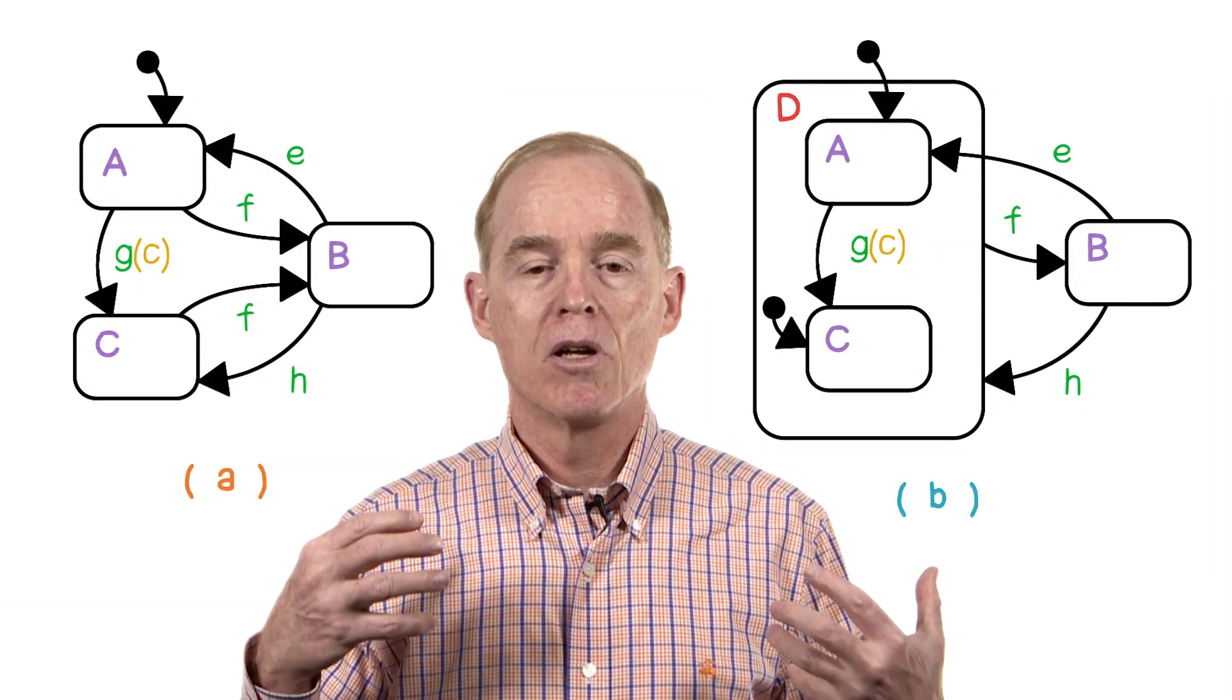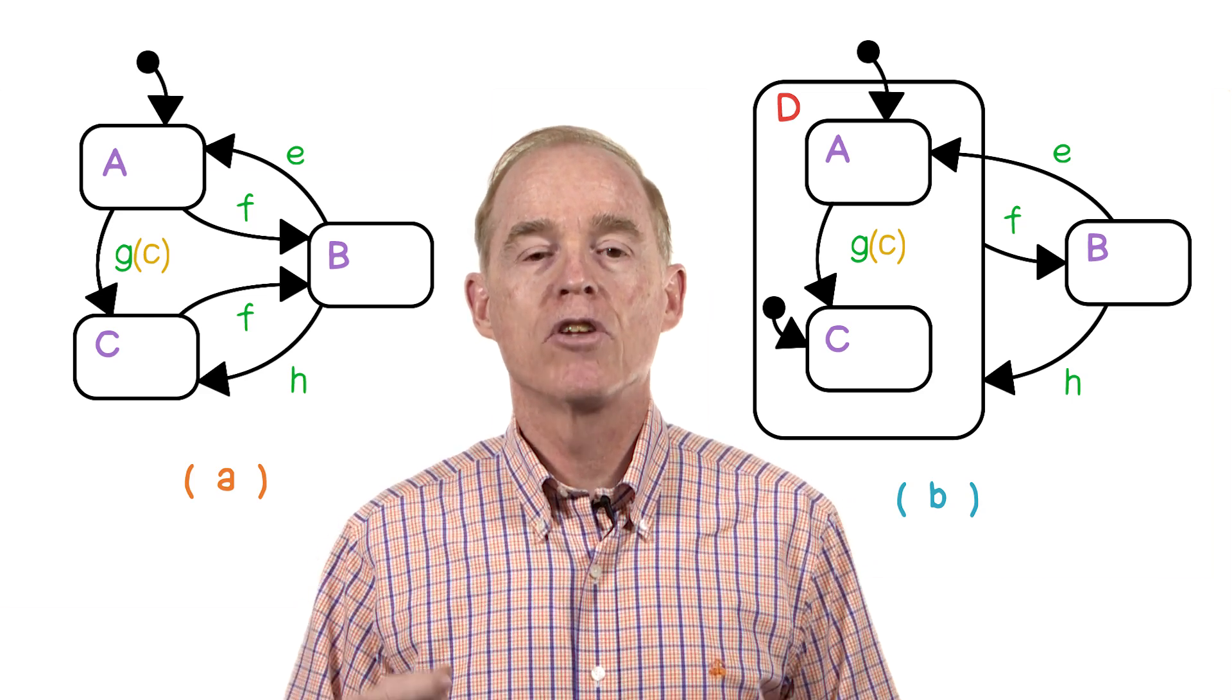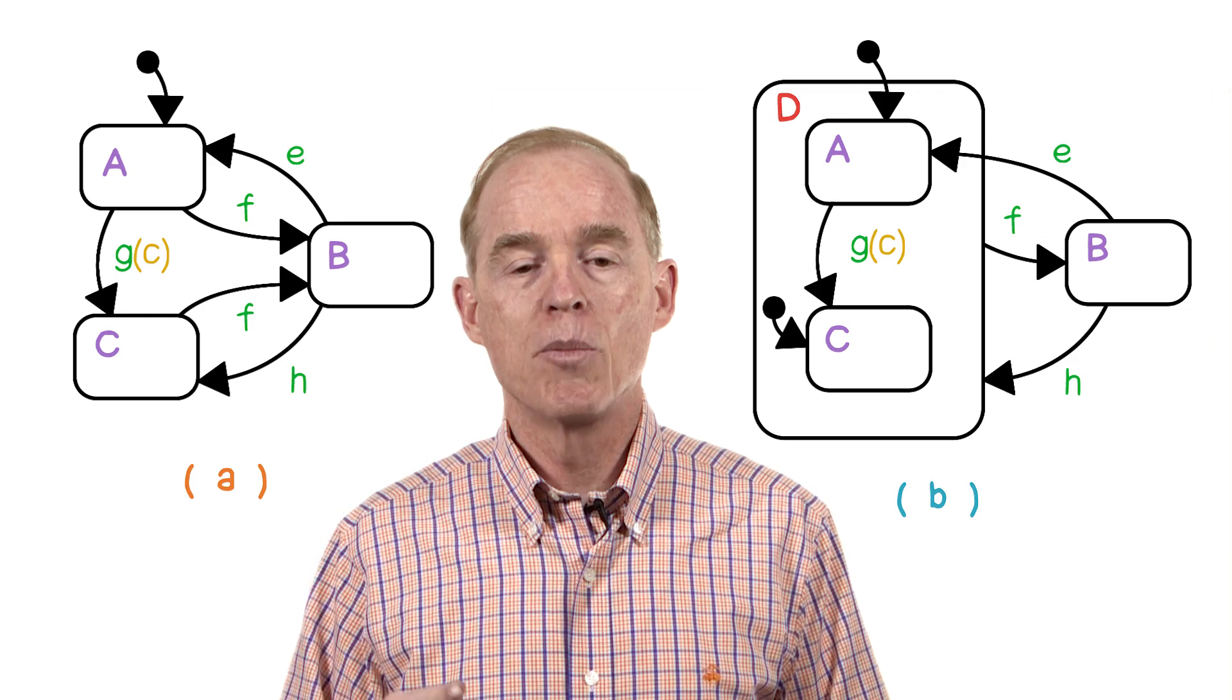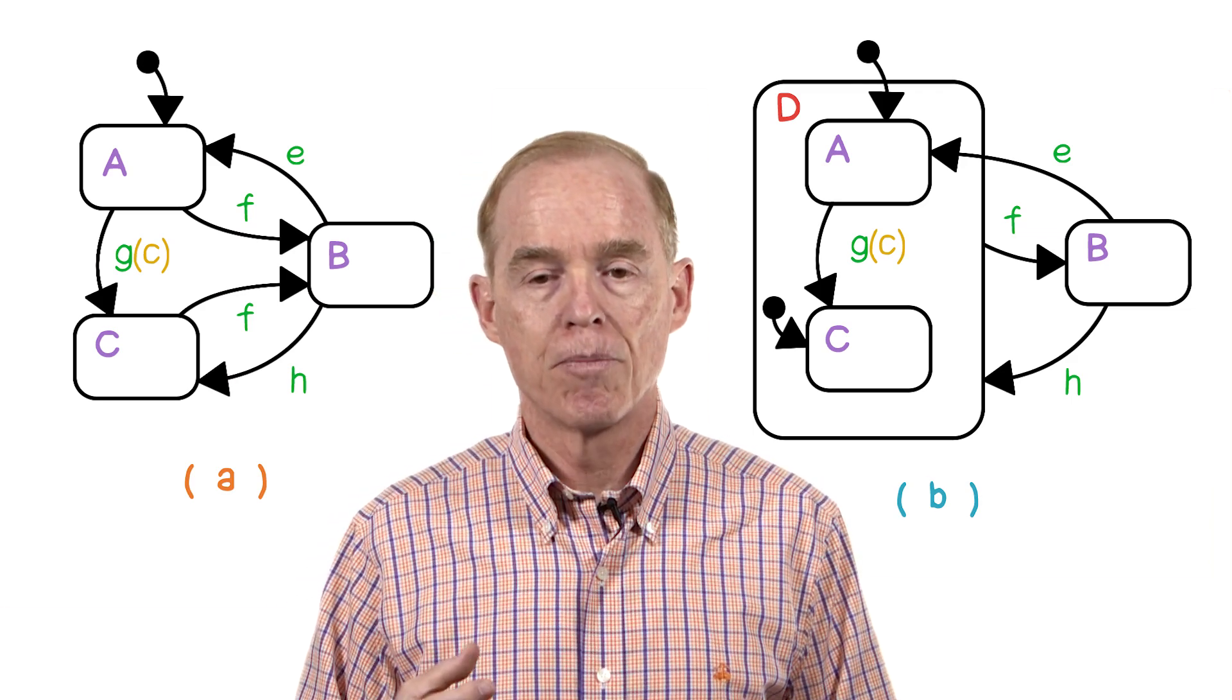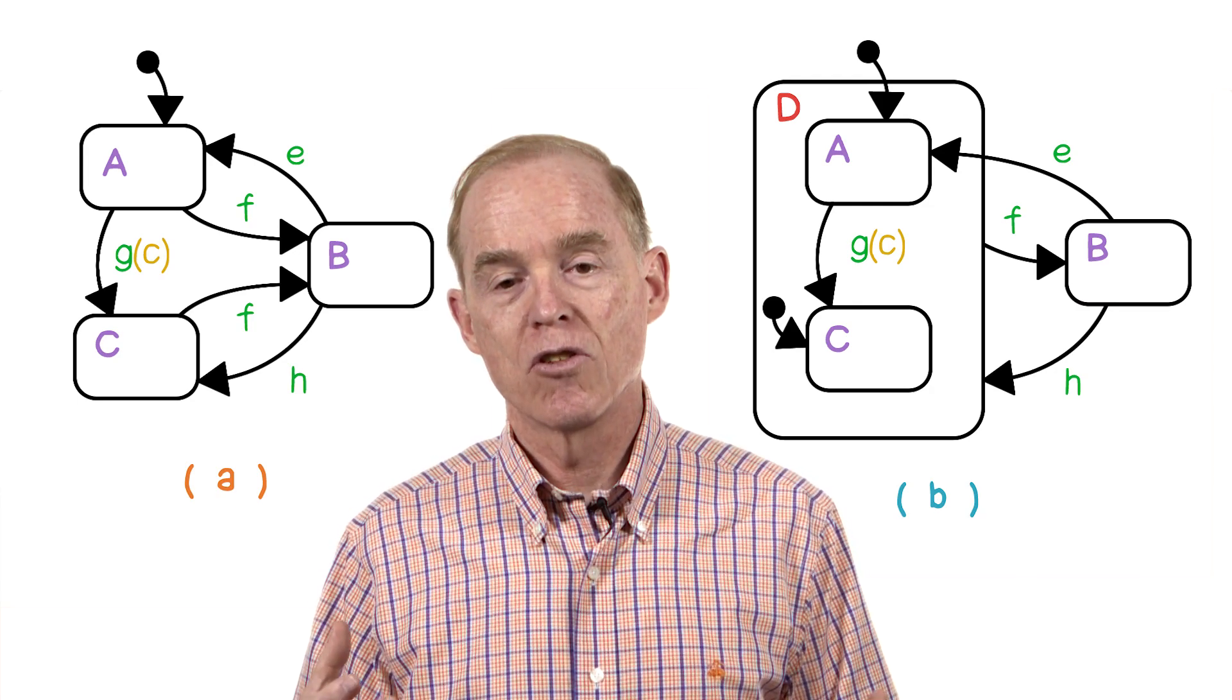On the left, there's a state machine that has three states. Notice the default state is the top one with the line coming into it, and there are transitions among the states. Totally, there are six transitions there.